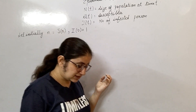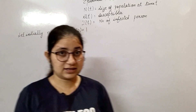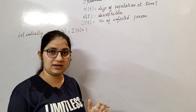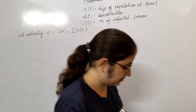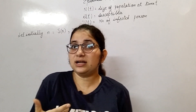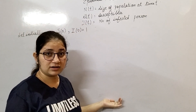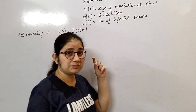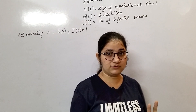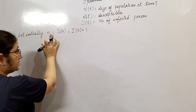If susceptibles get infected, the number of susceptibles decreases and at the same time the number of infected persons increases — these two are inverses of each other. When one is decreasing, the other is increasing. In this type of model, a person is either susceptible or infected — one among these two.